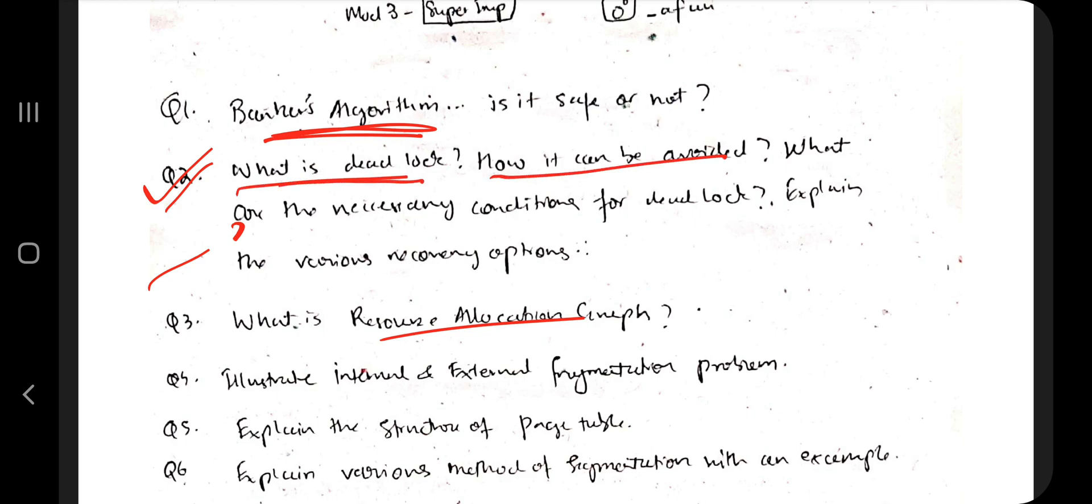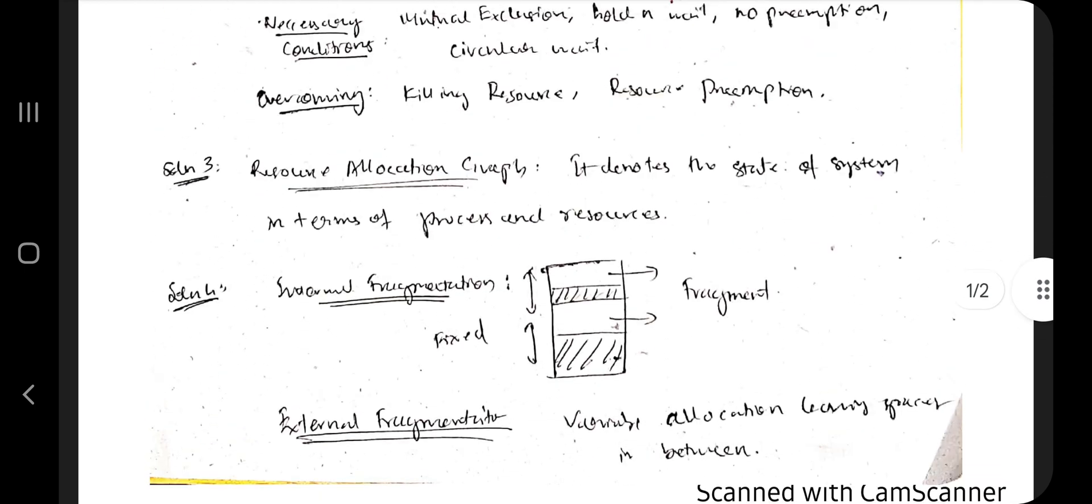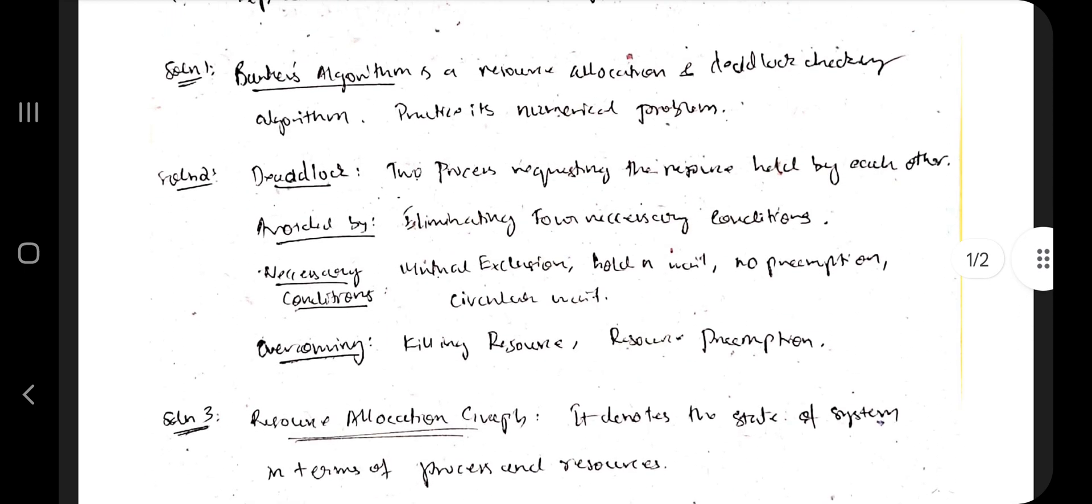You need to know what is the deadlock, how it can be avoided. There are few steps, what are the necessary conditions for the deadlock, explain the various recovery options. So I have mentioned few key points here: first you need to define deadlock, then avoid it by what factors, what are the necessary conditions, how you can overcome it. So you have to write a few points regarding each of these.